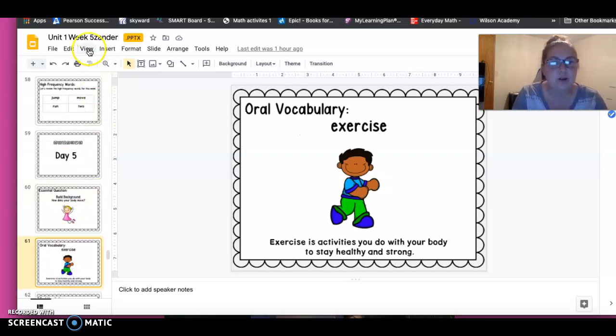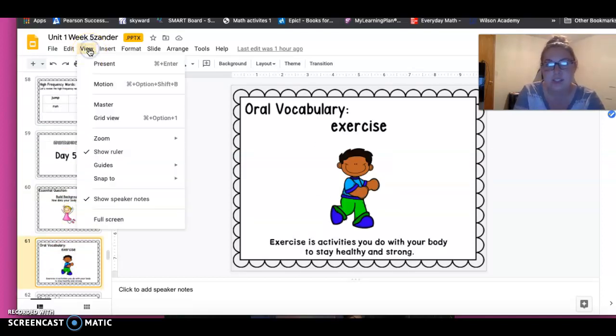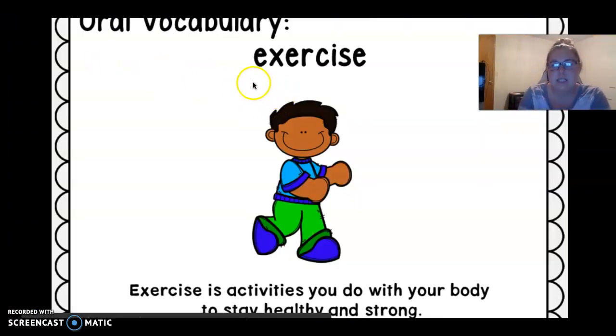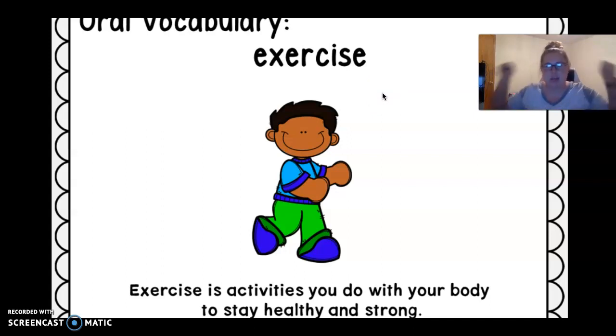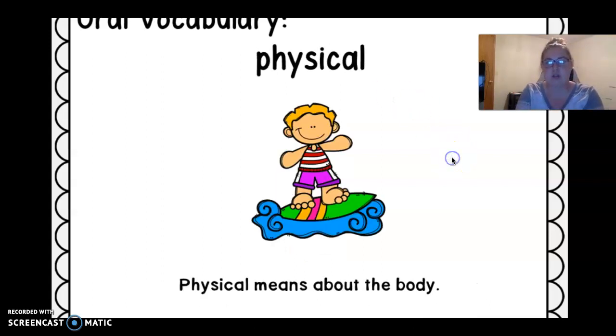Alright, we are going to go over our vocabulary words. Let's see if you remember them and what they are. Our first word is... Do you remember what it is? Exercise. What is exercise? Exercise is an activity that you do with your body to stay healthy and strong. You can run, you can lift weights, you can do push-ups. You can do different exercises to keep your body healthy and strong. What's this word? Remember PH says the F sound. Physical. Physical means it's about the body. You have to use your body to do it.